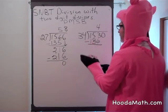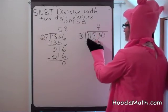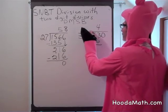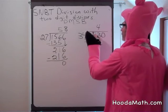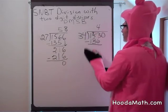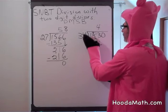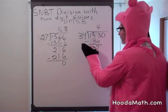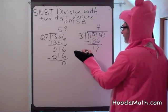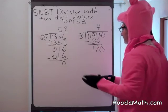Now we subtract. 13 — we can't take 6 from 3, so we regroup. This becomes a 4, this is a 3. 13 take away 6 is 7. 4 take away 3 is 1.